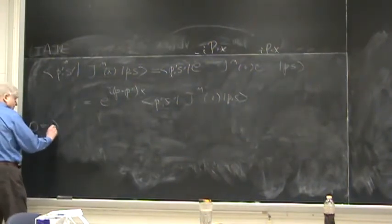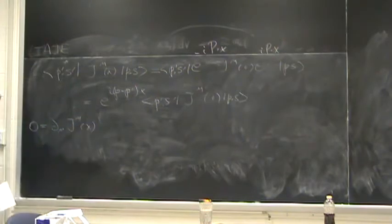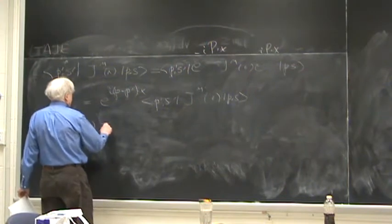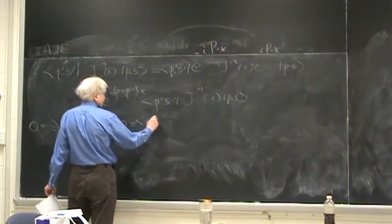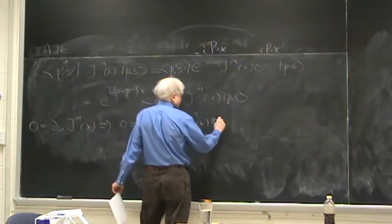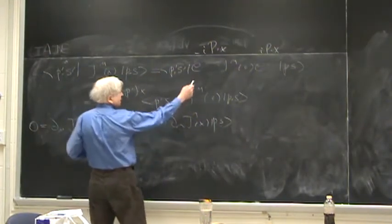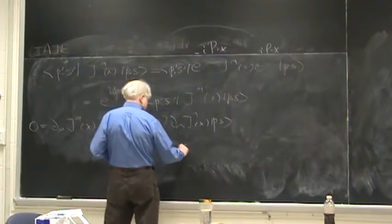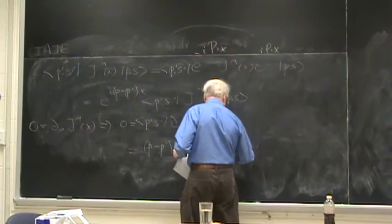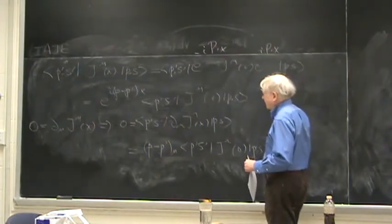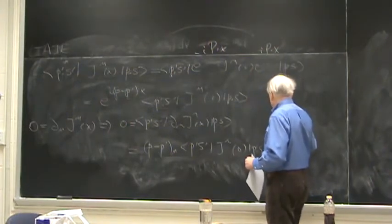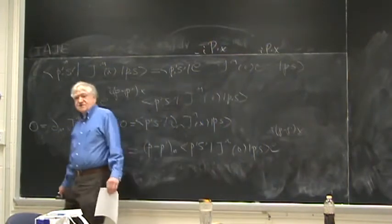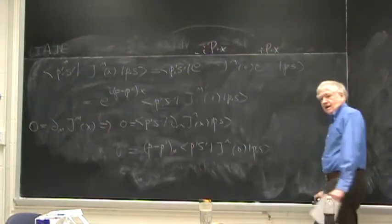Current conservation tells us that the four-divergence of J_mu is zero. That means zero equals ∂_mu ⟨p', s'| J^mu(x) |p, s⟩. When you differentiate, what you get is (p - p')^mu times ⟨p', s'| J_mu(0) |p, s⟩ equals zero, with or without the phase factor e^{i(p - p')·x}. So that's one relation that must be satisfied.